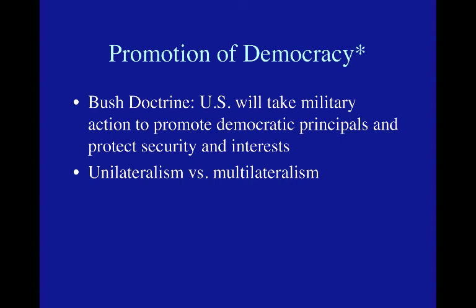The Bush, Obama, and Trump administrations have all made clear that the US will encourage democracy abroad. The Bush Doctrine, announced shortly after 9/11, said the US will take military action to promote democratic principles and protect security and interests — going back to Wilsonianism, the idea that we should spread democracy and freedom abroad. The question is whether to do this unilaterally or multilaterally. Under Bush we trended toward unilateralism; under Obama, more toward multilateralism; under Trump, back toward unilateralism to some extent.